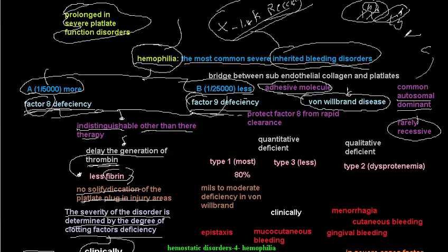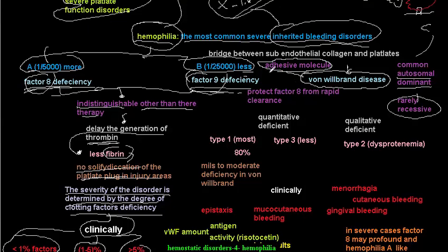So this is the blood vessel — by now you should know that the von Willebrand factors adhere the platelets to the endothelial layer of the blood vessels. That is the first function of von Willebrand factor. The second function is that it protects Factor 8 from rapid clearance. So there is some connection between von Willebrand disease and Factor 8 — if we have a problem with von Willebrand factor, we will have a deficiency of Factor 8 in many cases.